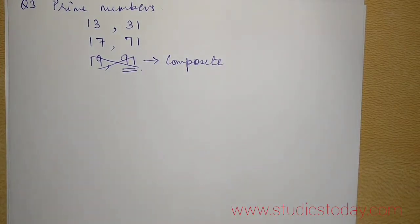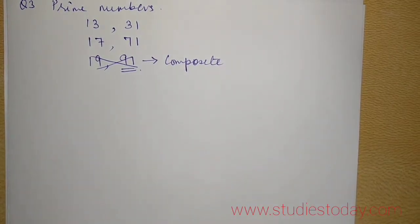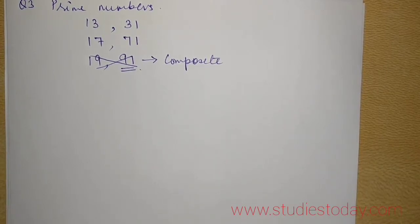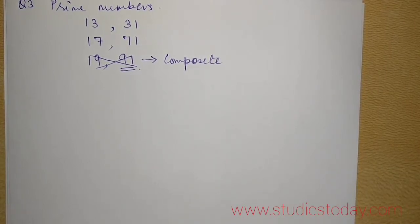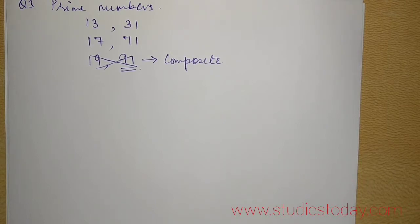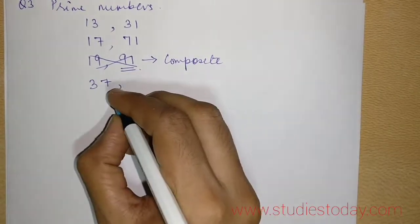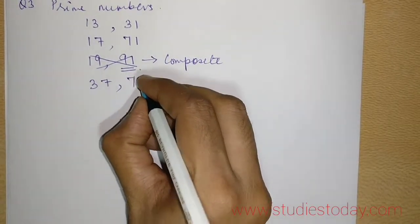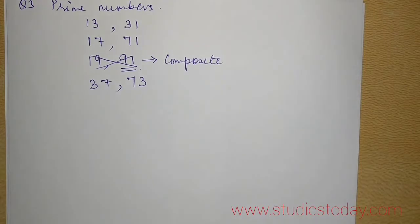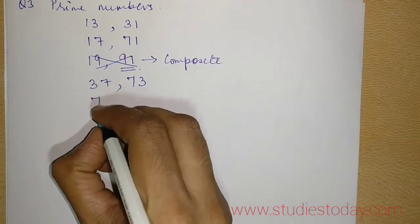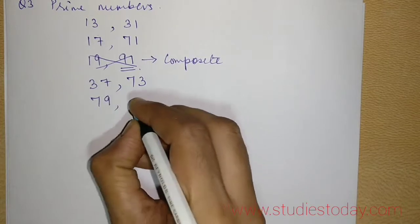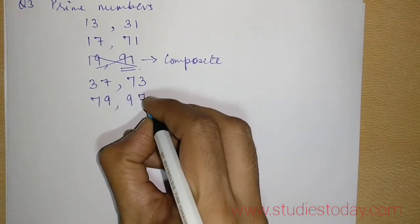Now the next number that I choose is 23 but when I reverse the order I get 32. Again I cannot choose that. So by hit and trial the next number that I come and I notice is 37 which when reversing gives 73 in which both are prime. The next number is 79 and you reverse you get 97.